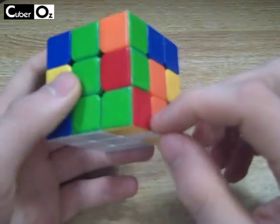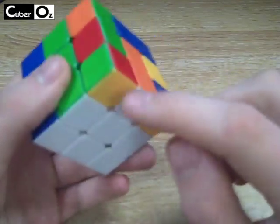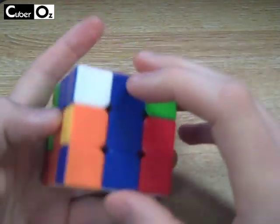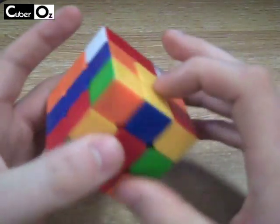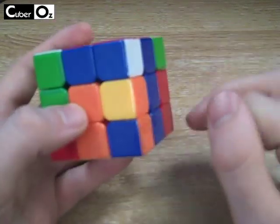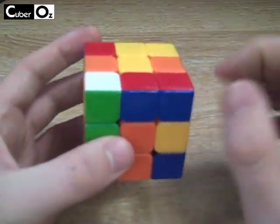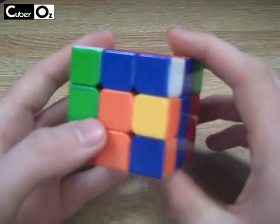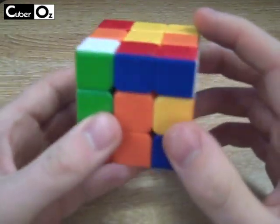F2L stands for first two layers. And instead of inserting the corners individually and then the edge pieces, we're going to be matching them up as one and inserting them together. This effectively cuts out one whole stage.